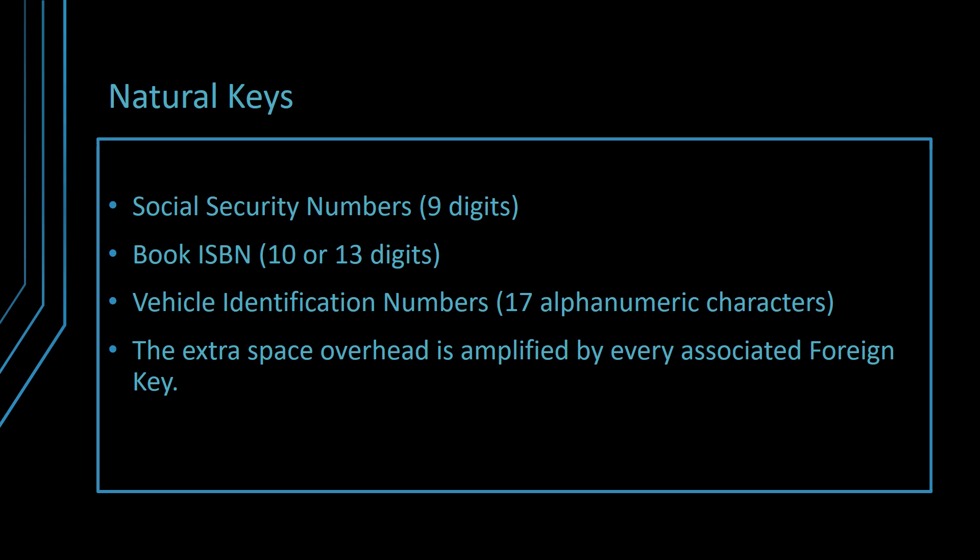In order to be unique, the natural ID is rather long. The social security number has 9 digits. A book ISBN used to have 10 digits, nowadays it has 13. The vehicle identification number is composed of 17 alphanumeric characters. Therefore, to ensure their uniqueness, a natural key is going to be long, and that can take a significant amount of space in the database. It's not just that the primary key will occupy all this space, but all the associated foreign keys linking back to this particular natural identifier primary key will be long as well.